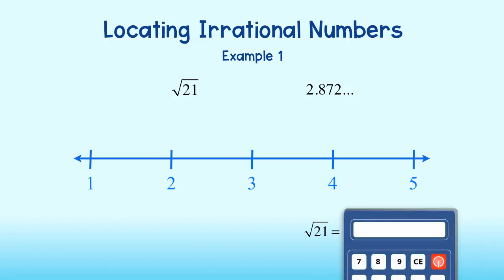The square root of 21 to the nearest tenth is 4.6. This is just slightly over halfway between 4 and 5, and so we will place it here on the number line.